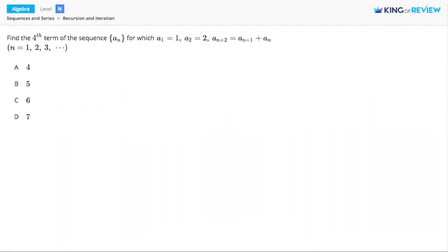Hi, this is King of Review. Here we'd like to find the fourth term of a sequence, where we're told the first number is equal to 1, the second term is 2, and each term after that is equal to the sum of the previous two terms. The n plus 2 term is the sum of the n plus 1 term and the n term.